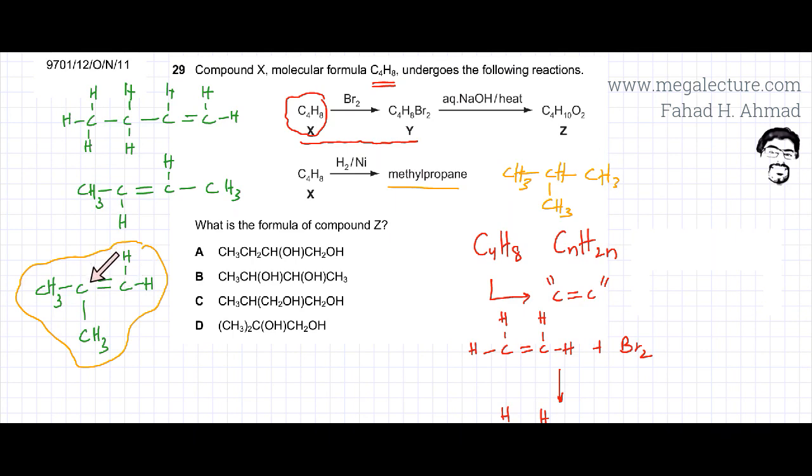One hydrogen would be added to this carbon atom and you'll get methylpropane. So this C4H8, this X would be this molecule over here. It's going to be a branched structure. So this indicates that it must be a branched structure. Now we can figure out the formula.